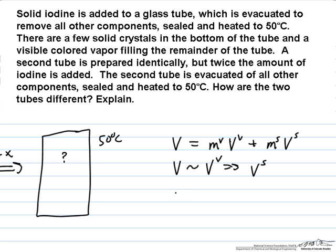And for this single component we can write down the fugacity of the vapor is equal to the pressure of the iodine, the partial pressure of the iodine, but since we only have iodine, it's also equal to the total pressure. That pressure is equal to the saturation pressure of iodine at 50 degrees C.